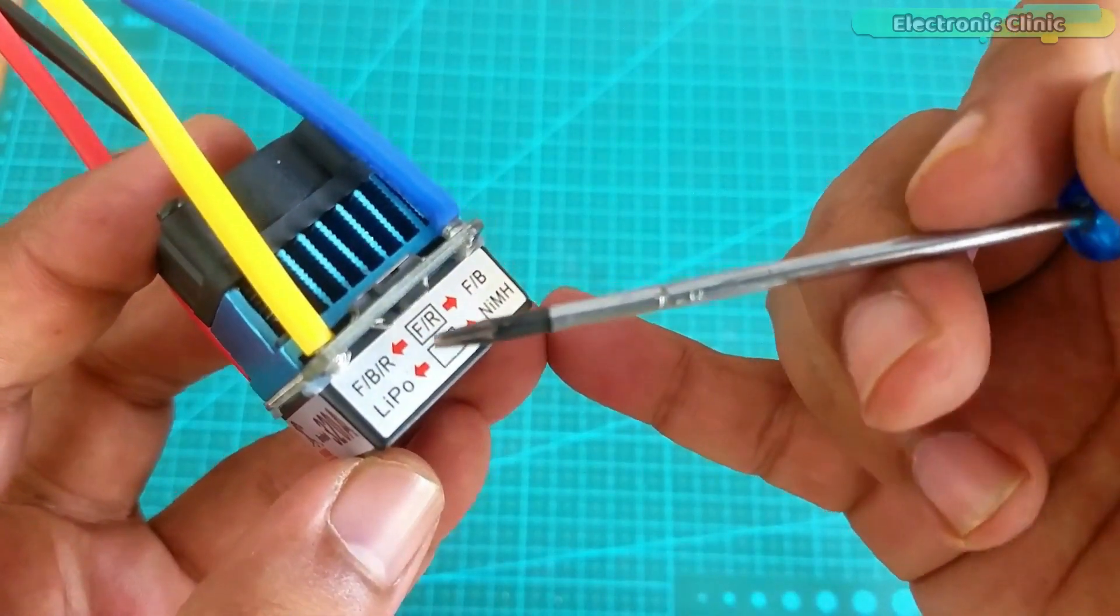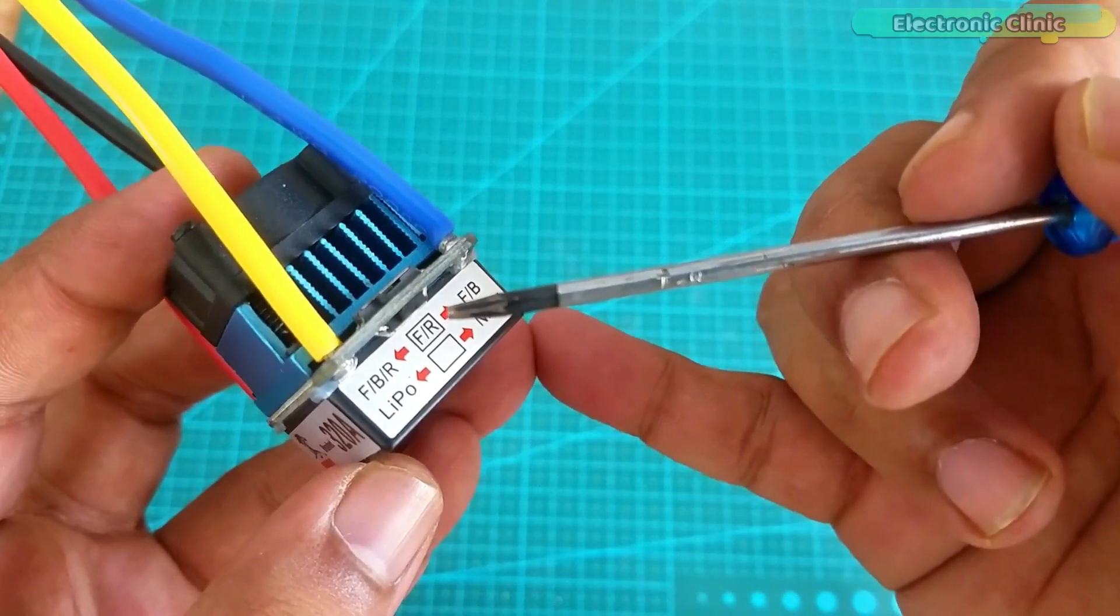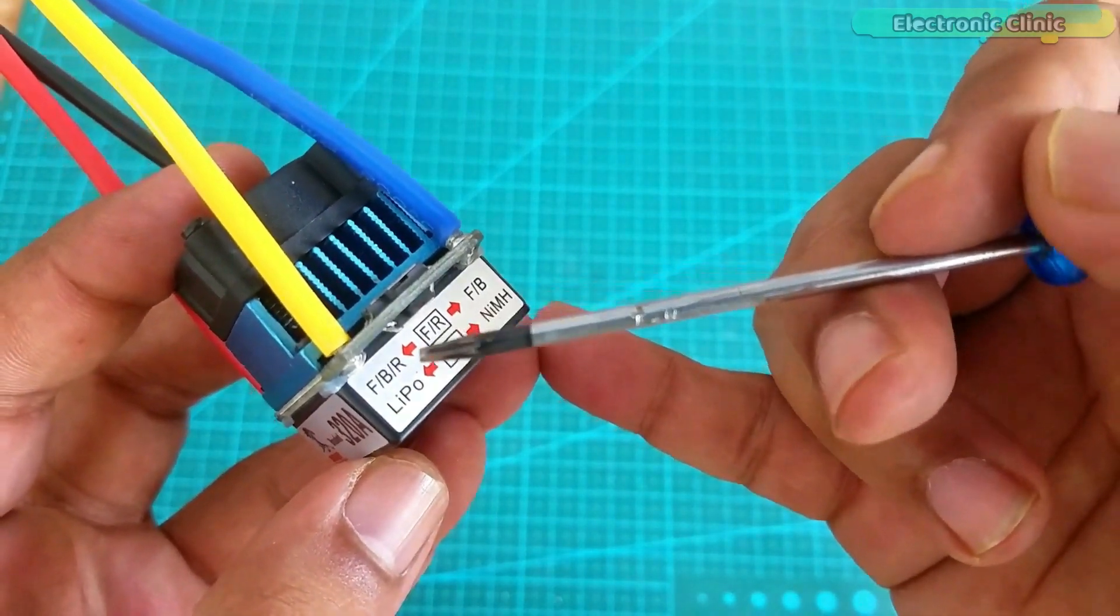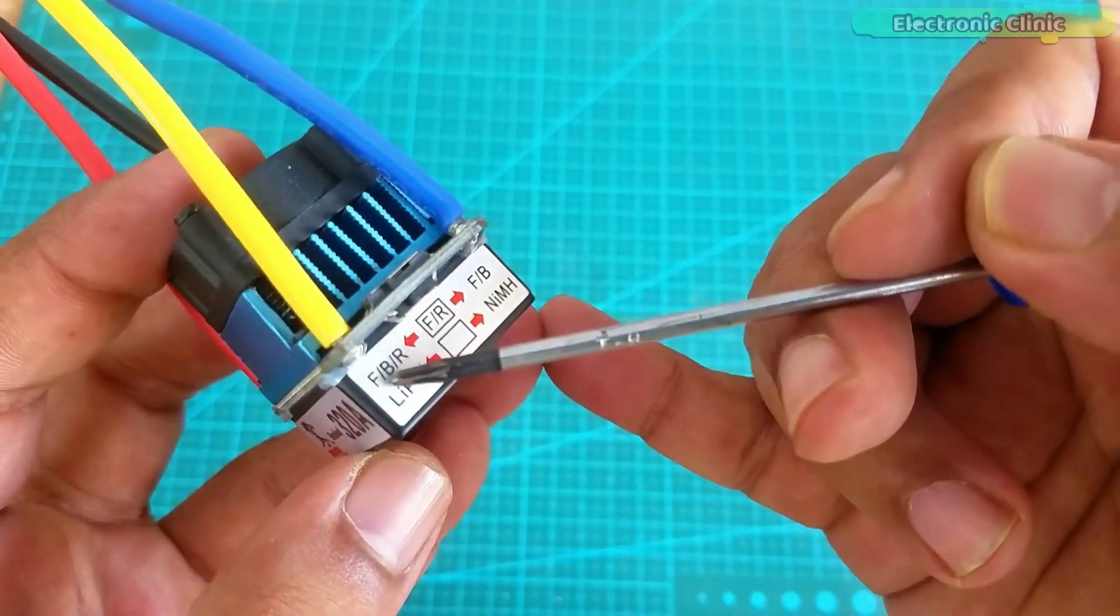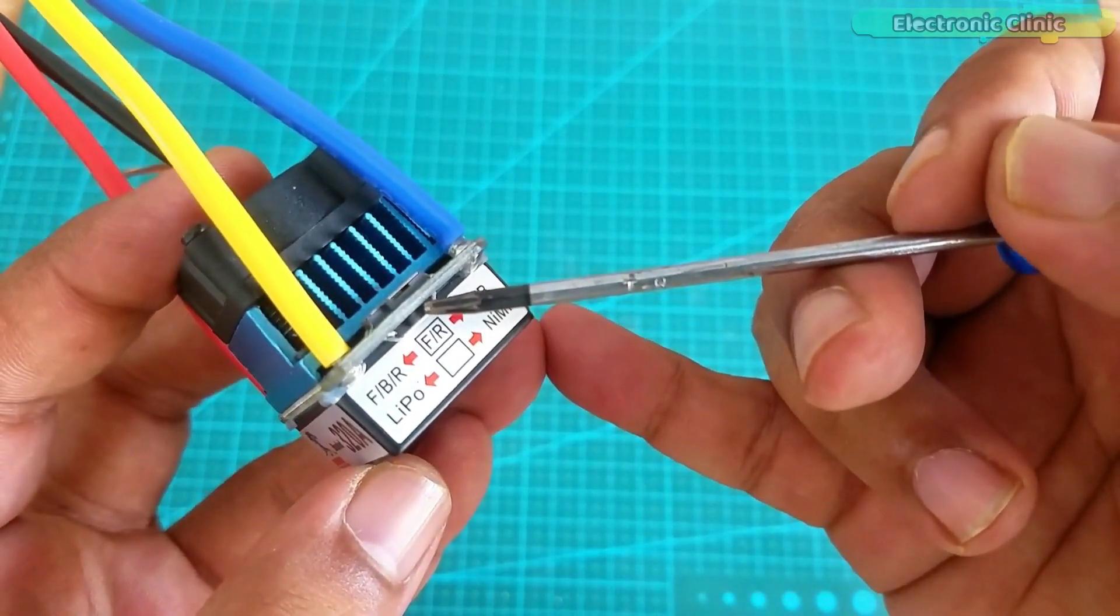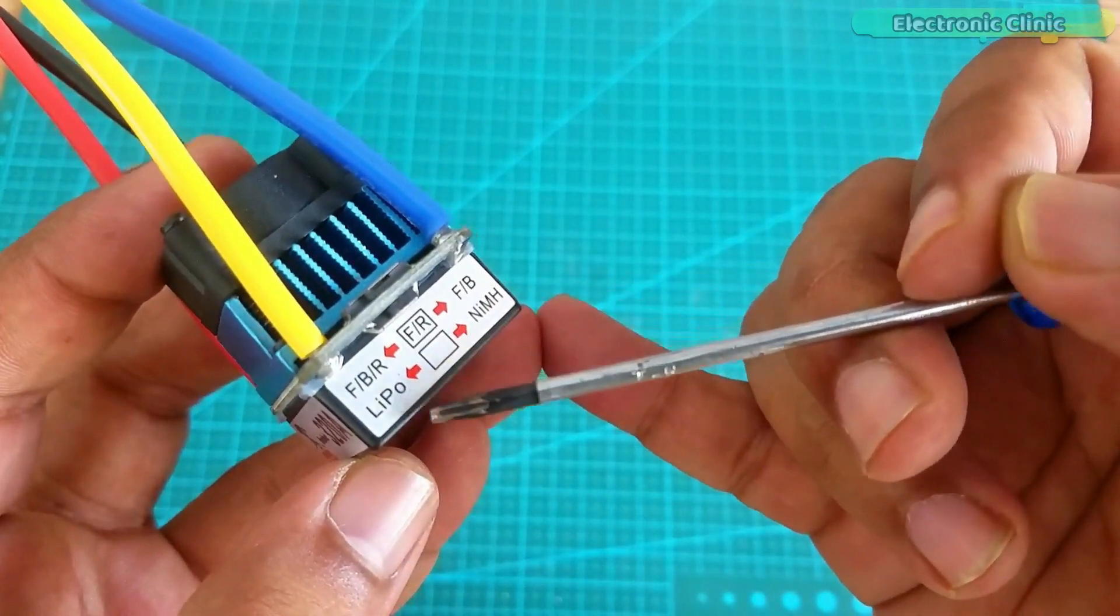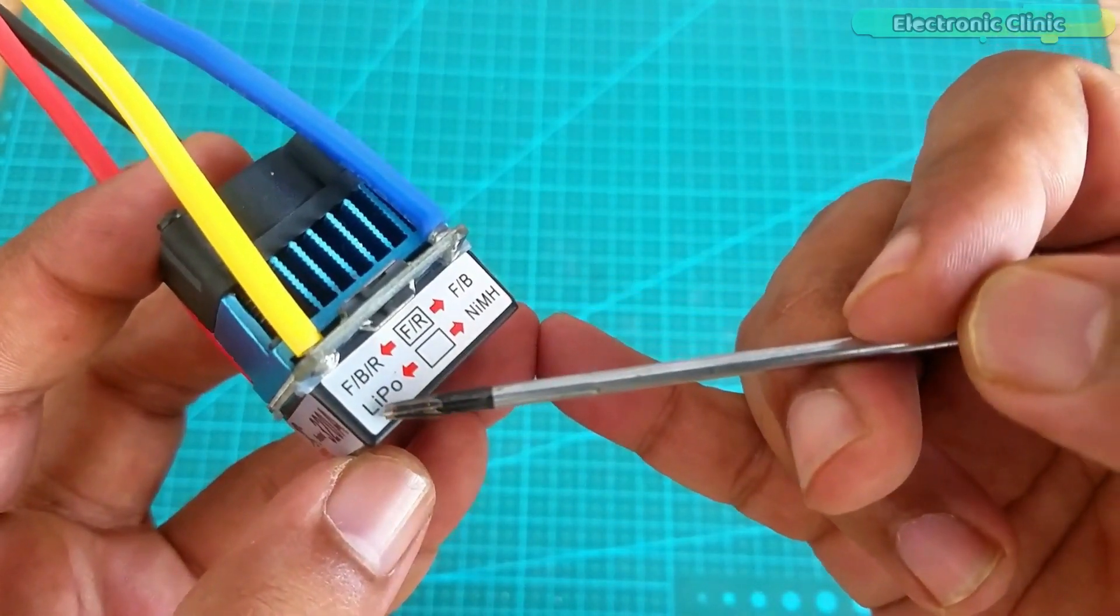The default value is bidirectional mode. If you want to know more about these modes then read my article. I will provide a link in the description. For this video I will continue with the default mode that is FBR. The switch on the bottom side is a two position switch and is used to select the type of battery. The default position is set to the lipo battery.